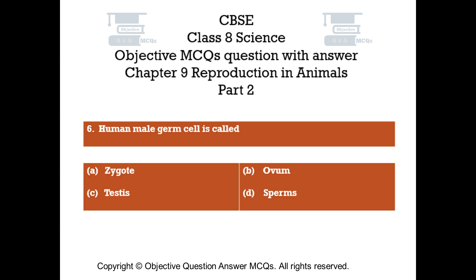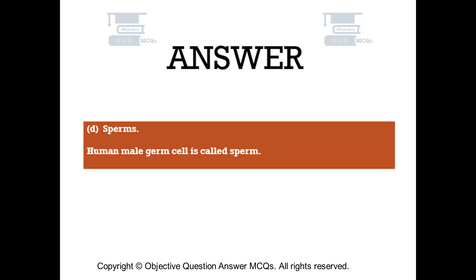Question number 6. Human male germ cell is called. Option A: Zygote. Option B: Ovum. Option C: Testis. Option D: Sperms. The right answer is Option D: Sperms. Human male germ cell is called sperm.